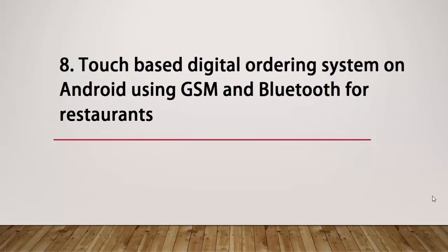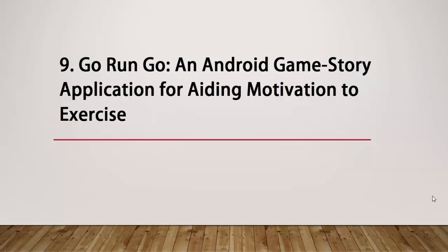The next topic is a touch based digital ordering system on Android using GSM and Bluetooth for restaurants. A passenger who is traveling can place an order before they reach the restaurant. They can also locate the restaurant on Google Maps using this application and place their order — making it a very useful application for those looking to visit a good restaurant.